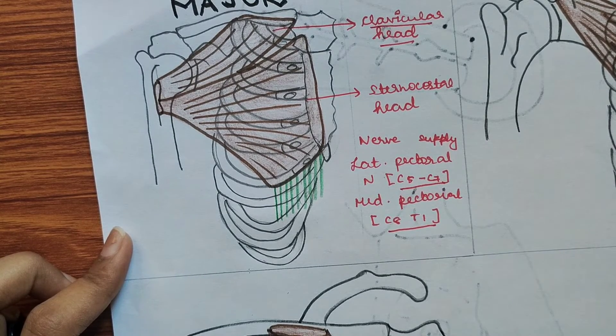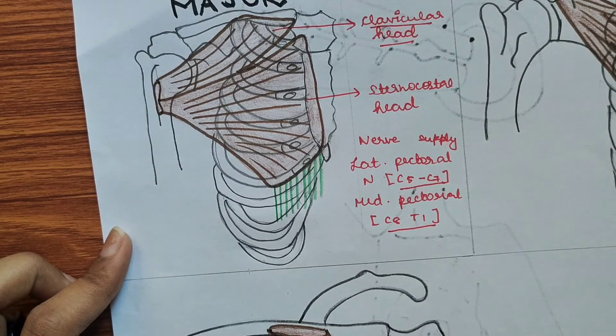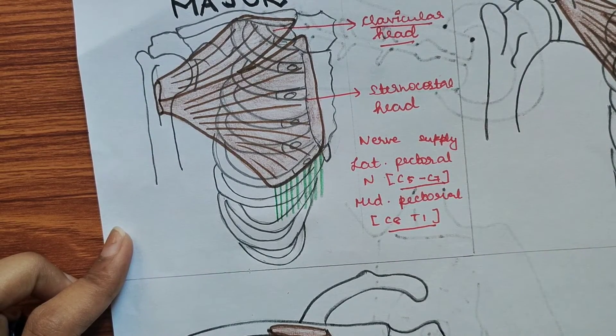The actions of the clavicular head and sternocostal head differ. The clavicular head helps in flexion of the arm, whereas the sternocostal head adducts and medially rotates the arm.